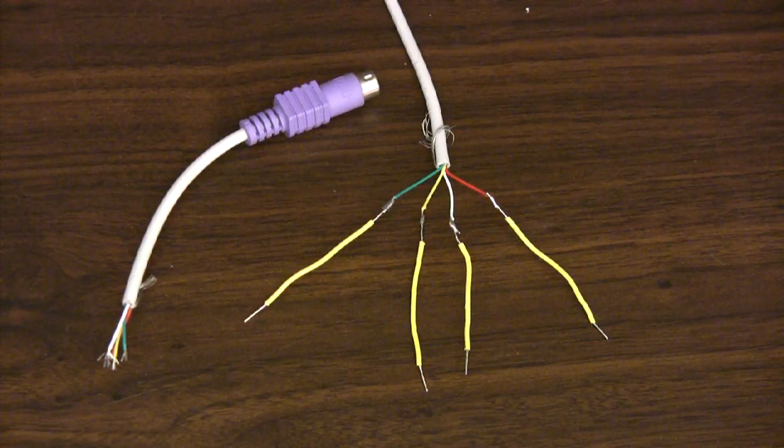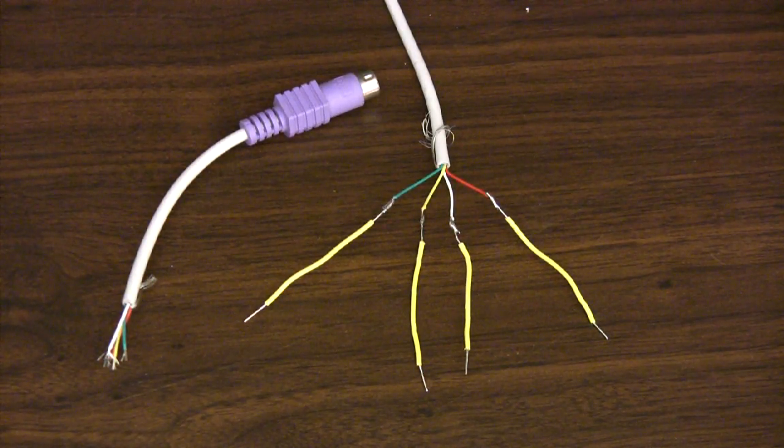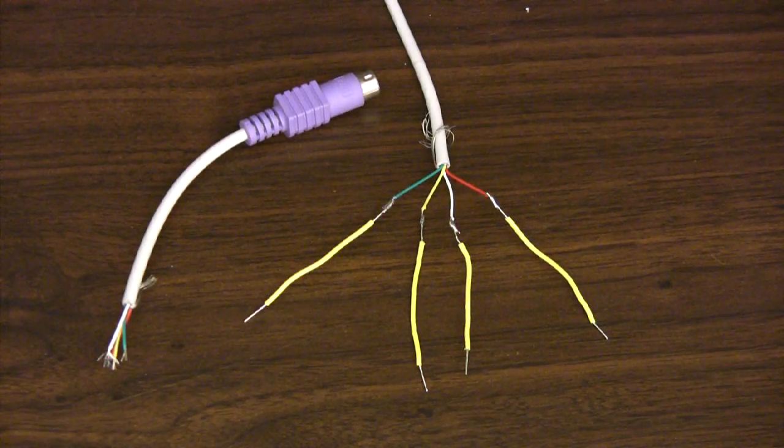Here, we just chopped off the connector end of the keyboard cable, and you can see there are four wires, corresponding to ground, power, a clock line, and a data wire.